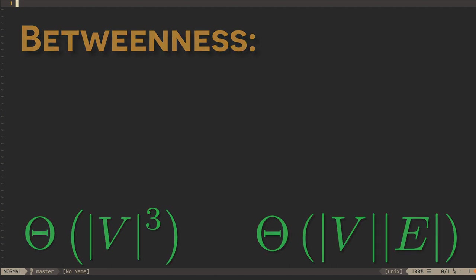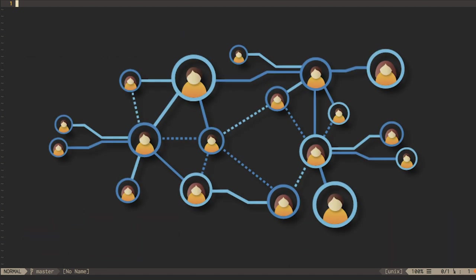Degree and betweenness centrality are critical to social network analysis, the study of how people in groups interact with each other at a systemic, rather than individual, level. Social network analysis turns out to be important in areas you'd expect, like sociology, but also in areas you might not expect, like criminology.